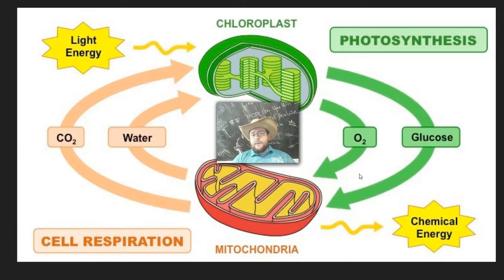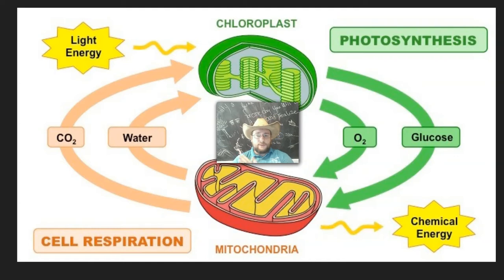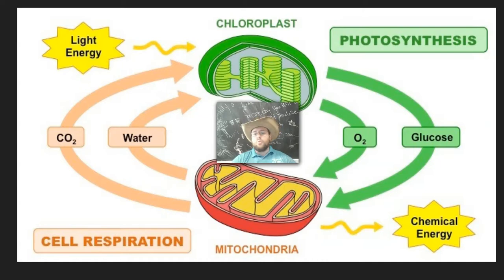Remember, mitochondria and chloroplasts are organelles which are at the center of this cycle. Mitochondria perform cellular respiration, and photosynthesis is done by chloroplasts. This is happening inside every single eukaryotic cell — the cells that have nucleuses and membranes throughout the tree of life.